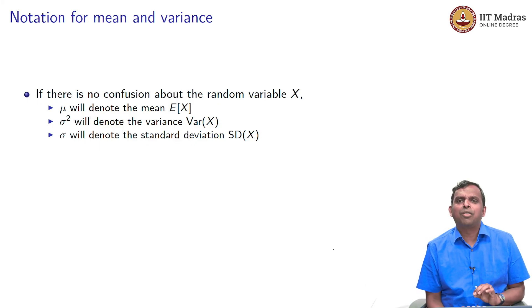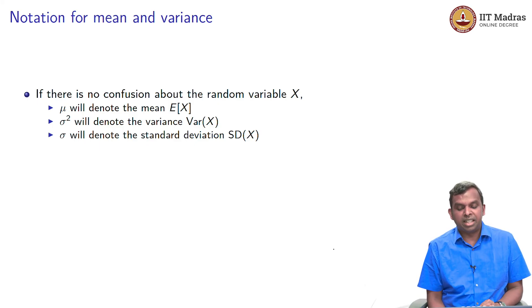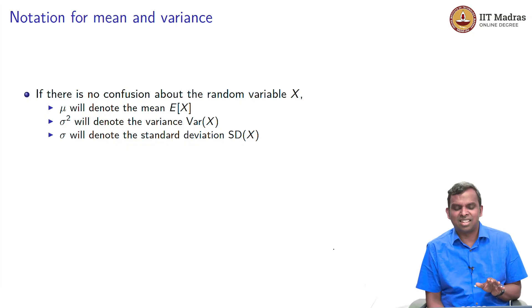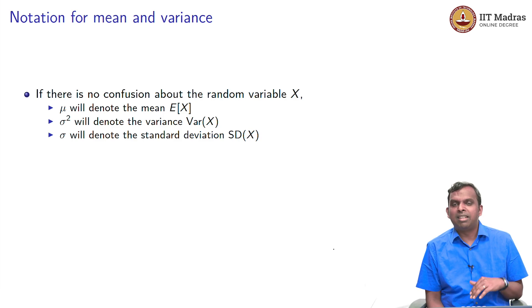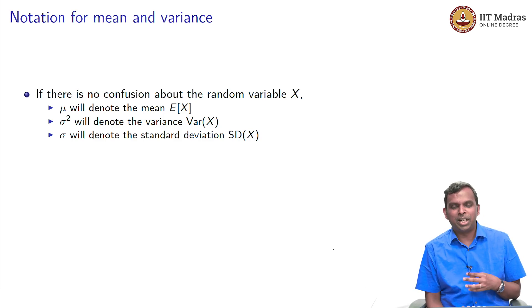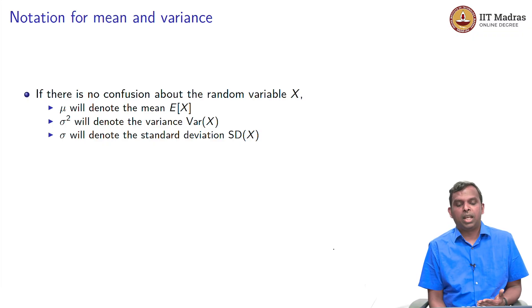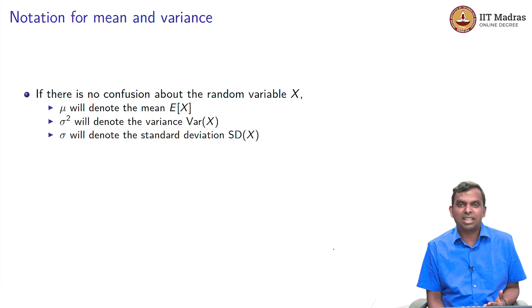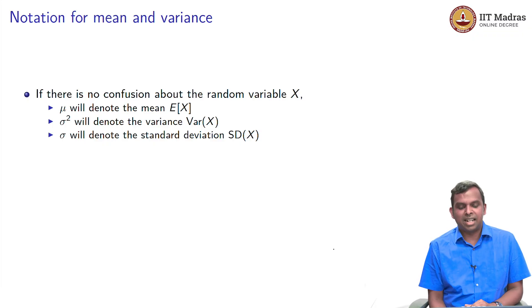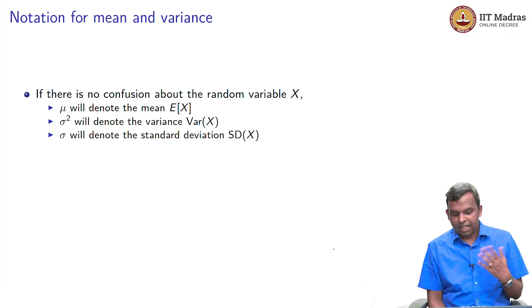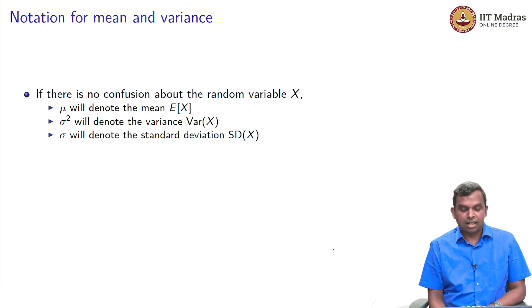Before that, we are going to use a simplified notation for mean and variance. This is very common in probability and statistics classes. If you know what random variable you are talking about, everybody will denote mean as mu — there is no need to write E of X. If you see the notation mu being used, that typically represents the mean. Same thing with sigma squared: sigma squared will always represent the variance of X if the random variable X is clear from the context. Clearly, sigma is the standard deviation. You will see mu and sigma again and again in statistics and probability classes.